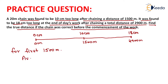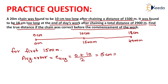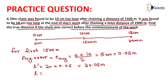The average error for the first 1500 meters equals the initial error, that is 0, plus the error after chaining 1500 meters, that is 10 centimeters, divided by 2. So the average error equals 5 centimeters, or 0.05 meters. Therefore, small l' becomes 20 plus 0.05, which equals 20.05 meters, and small l equals 20 meters.